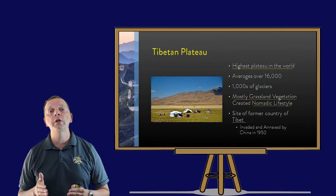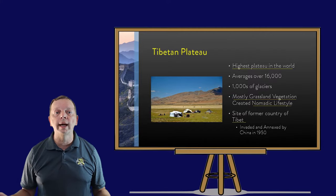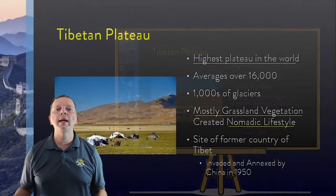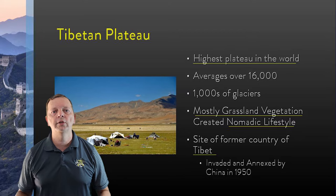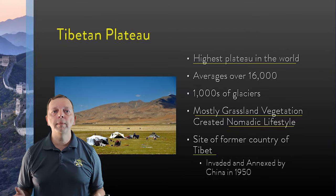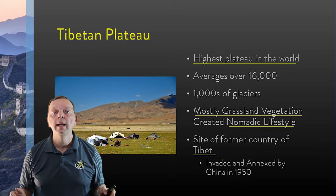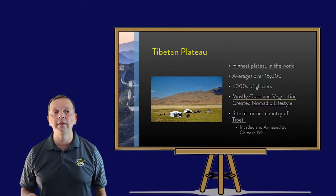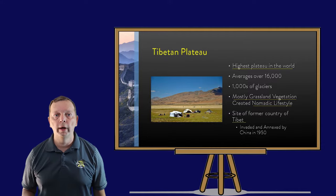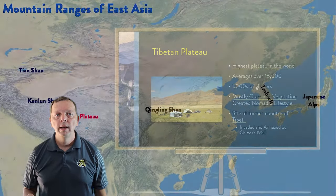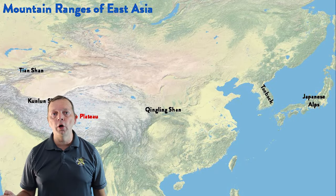Along with thousands of glaciers, the vegetation of the Tibetan Plateau consists of grasslands, and the people there developed as nomadic, much like the Central Asians we talked about earlier. The Tibetan Plateau used to be a site of its own country, Tibet, until the Chinese invaded in 1950 and annexed Tibet into greater China.